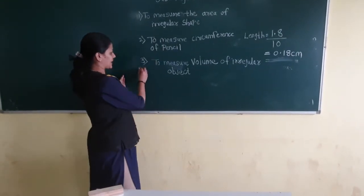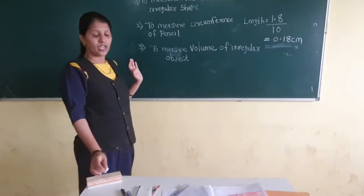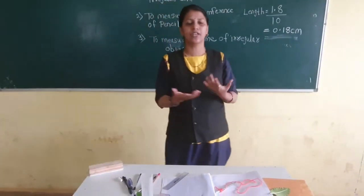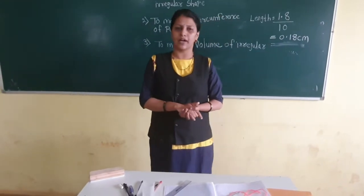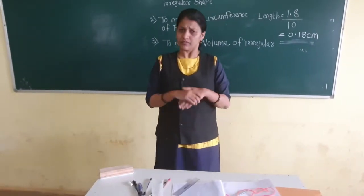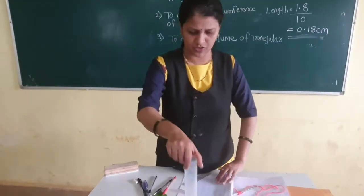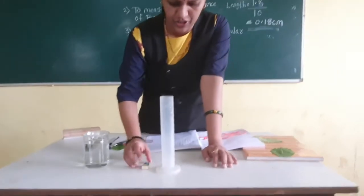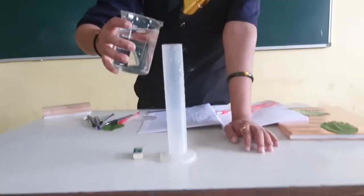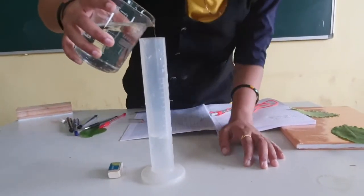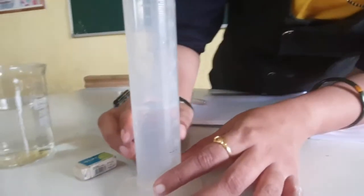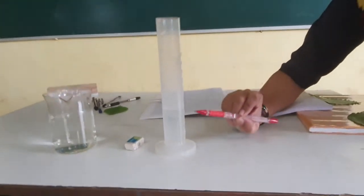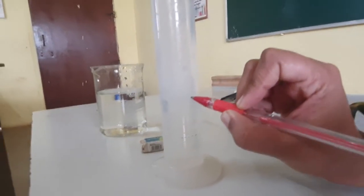Let's start the third activity: to measure the volume of an irregular object. If the shape is a cube or has a proper shape, then by using a formula we can find the volume. But if the object is irregular, we use a measuring cylinder. I am going to use a rubber as an irregular object. I will add water — suppose 40 ml of water. You look at the water level at the lower meniscus, which reads 40 ml.